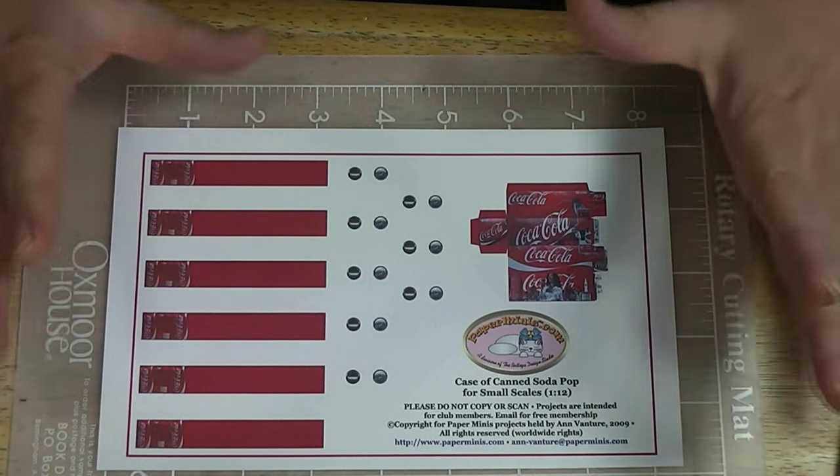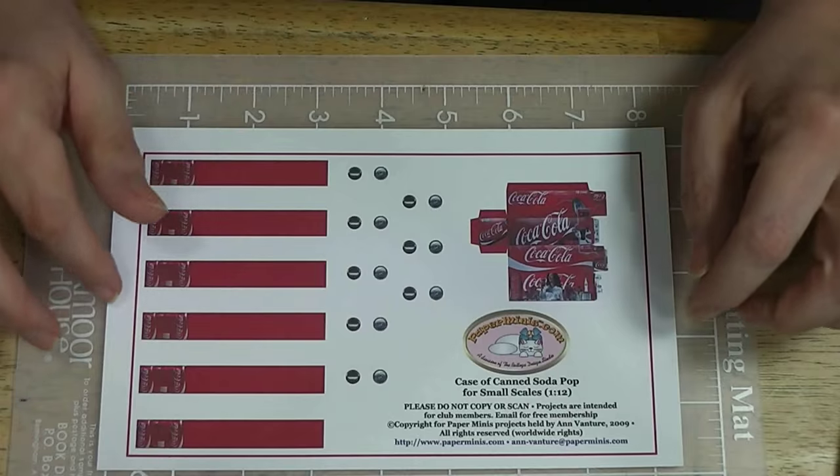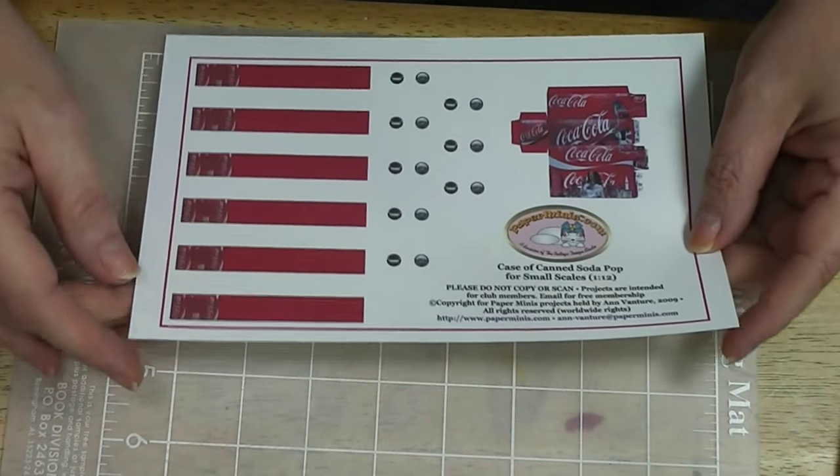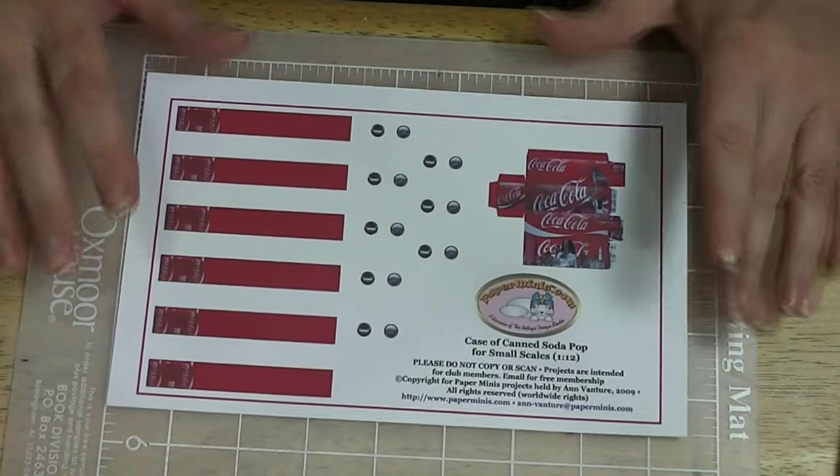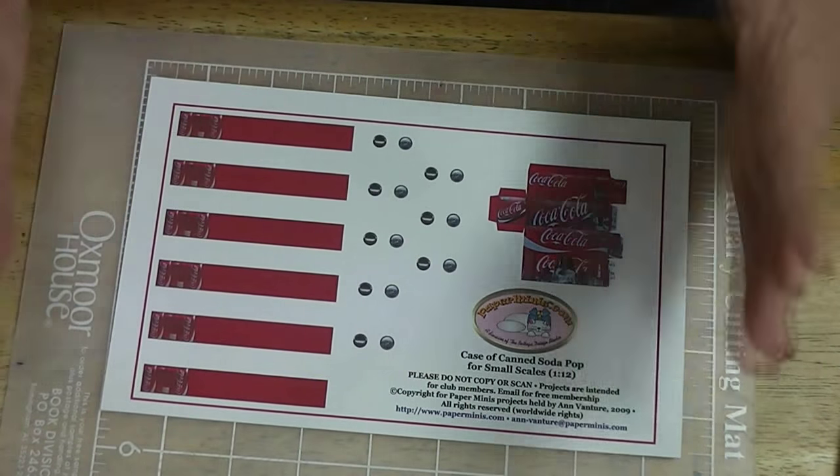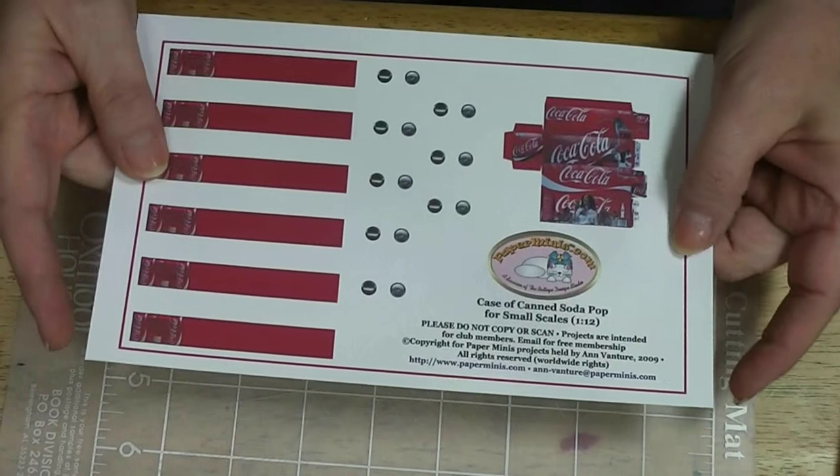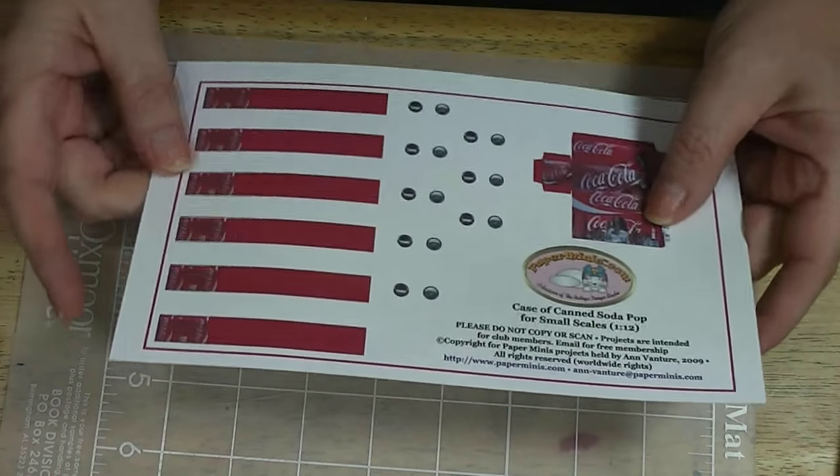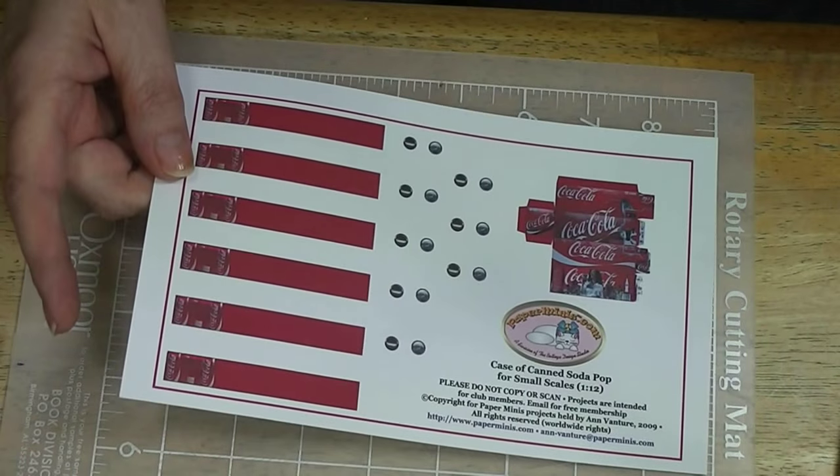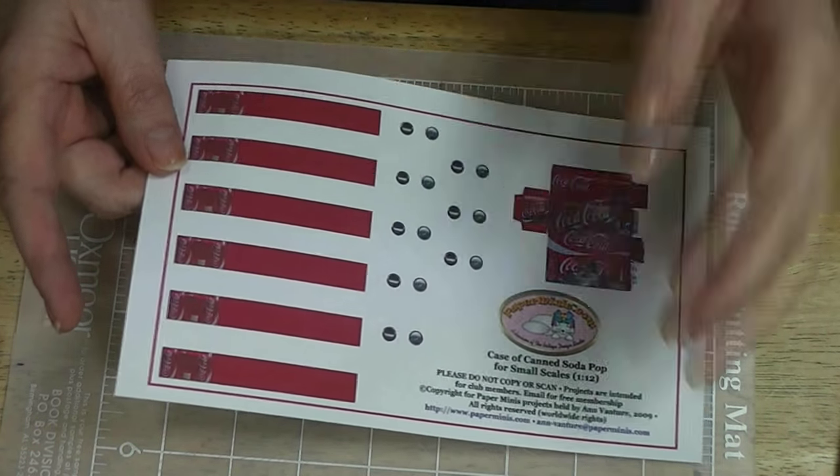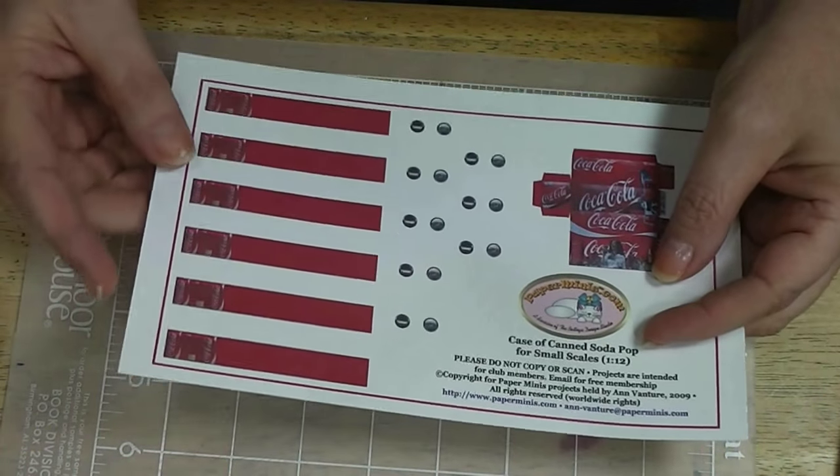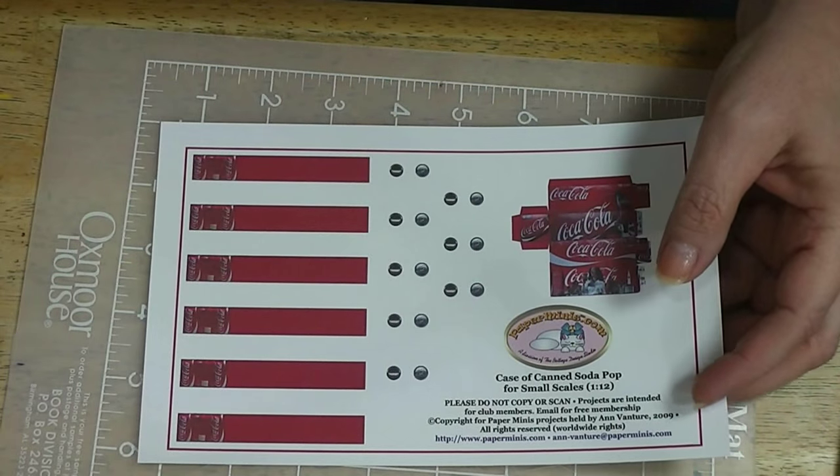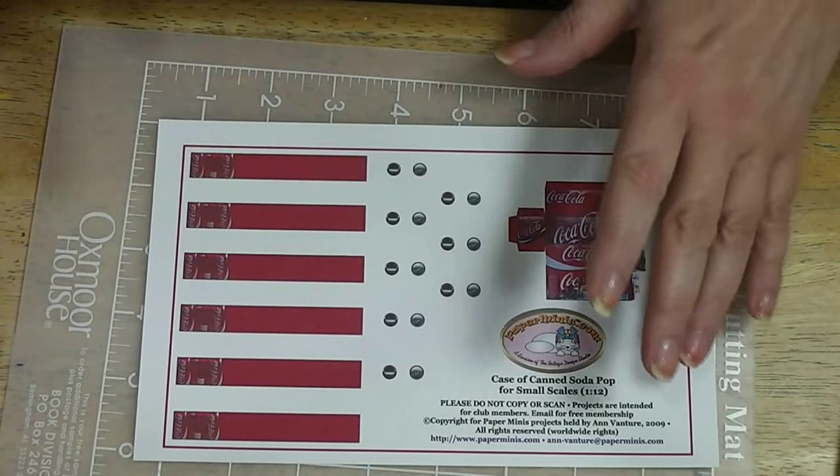All the complimentary projects are downloaded as PDFs. This one printed on half a sheet of paper. I printed this today on just smooth cardstock. We are going to put a clear finish on it to make the cans shiny. You can print this on photo paper, but sometimes glossy photo paper, the ink will crack. So I didn't want to do that today.